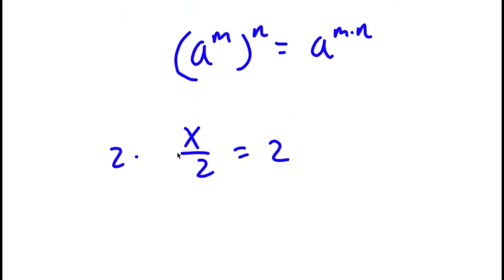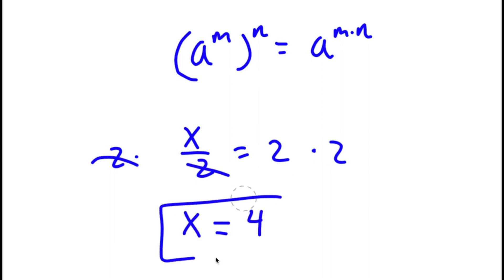To solve this, I'm going to simply multiply both sides by 2. These two cancel out. So on my left-hand side I have x, and 2 times 2 is 4. So x equals 4 is my answer.